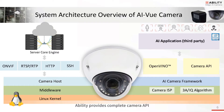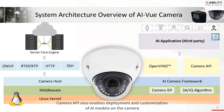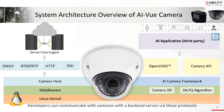ABRT provides a complete camera API that customers can use for image pre and post processing on an open platform. The common API slot allows customers to easily customize and deploy AI models on the camera. The AI View camera has built-in RTSP, RTP, HTTP, and SSH network services, allowing developers to integrate with back-end servers via these protocols.